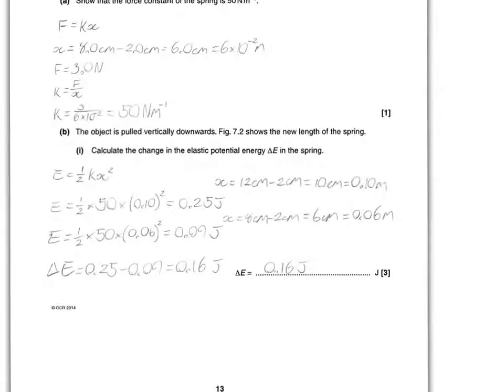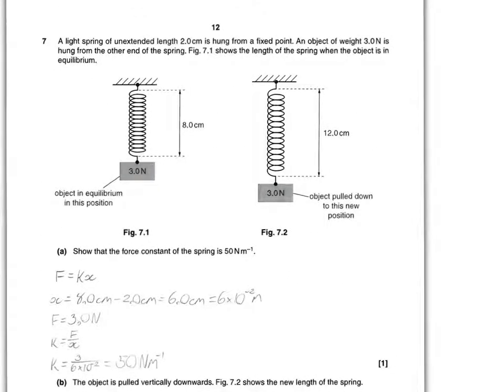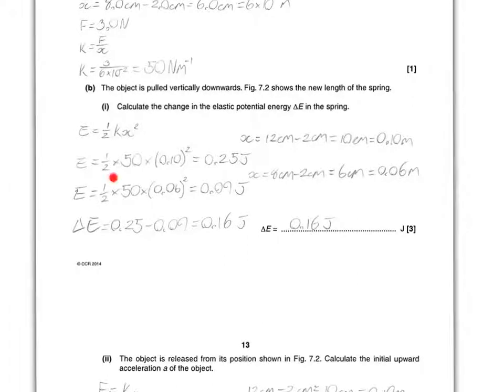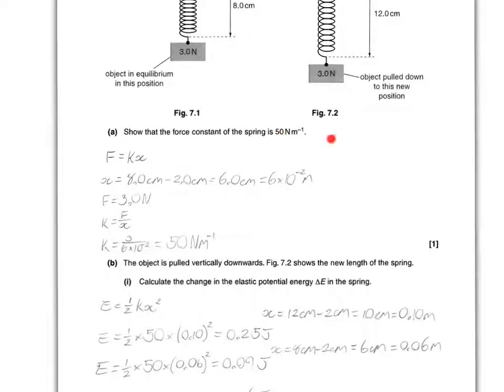7b. The object is pulled vertically down in figure 2. The new length of the spring is calculated. Calculate the change in elastic potential energy, difference in E, in the spring. For this, you will have to use the equation E equals half KX squared. First of all, you have to find out the extensions. 12, because this is 7.2, and that has a length of 12. 50, which is your answer there, and if you couldn't actually do this question, that could be achieved from there. So it's actually helping you a little bit.